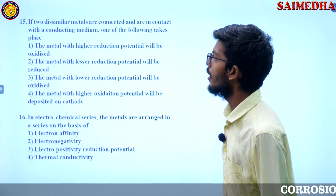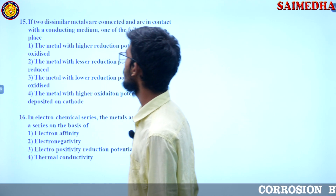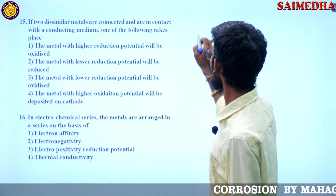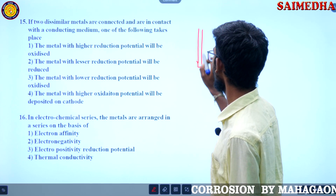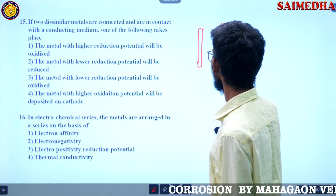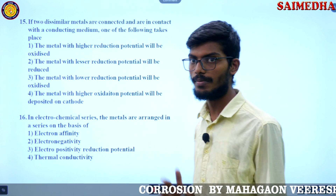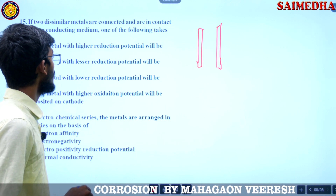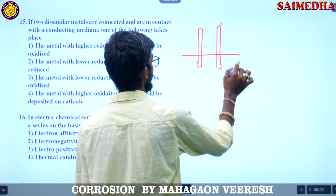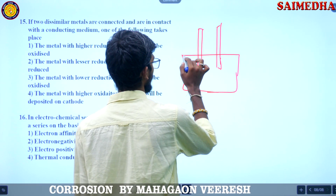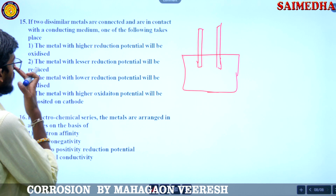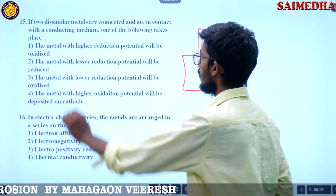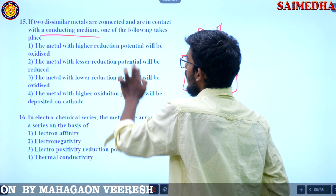If two dissimilar metals are connected and are in contact with a high conducting medium, one of the following takes place. We need to determine which metal will undergo oxidation.